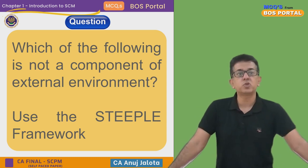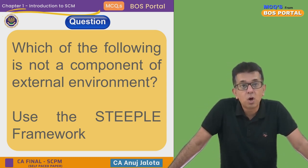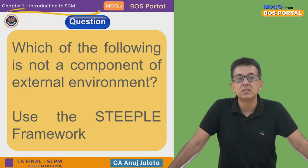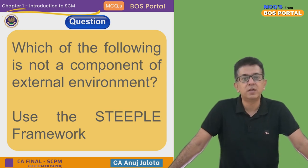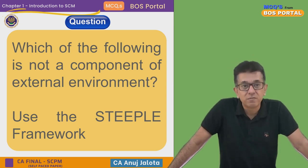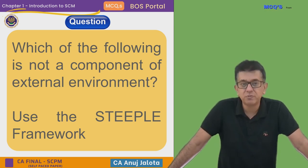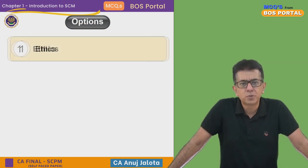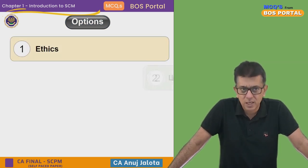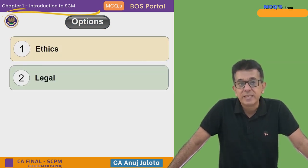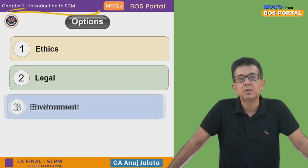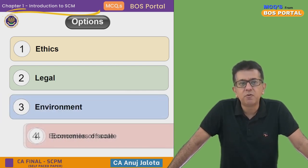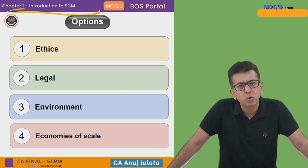Today's question: which of the following is NOT a component of the external environment using the STEEPLE framework? The four options are: first, ethics; second, legal; third, environment; and fourth, economies of scale.